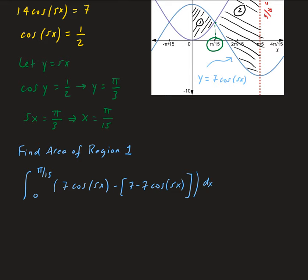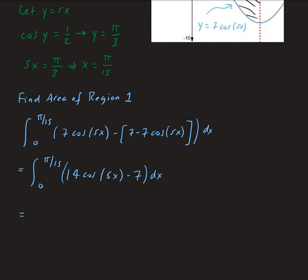Simplifying, the integral from 0 to pi over 15 of 14 times cosine 5x minus 7, which combines 7 cosine 5x plus 7 cosine 5x to get 14 cosine 5x minus 7. To integrate this, we use u-substitution. Let me do that on the side for the integral of cosine 5x.